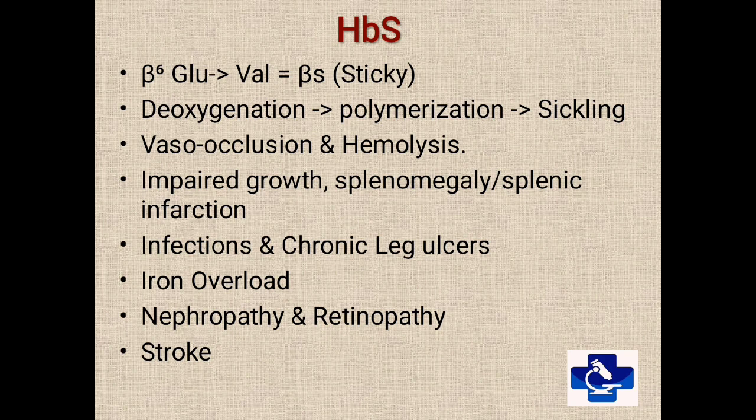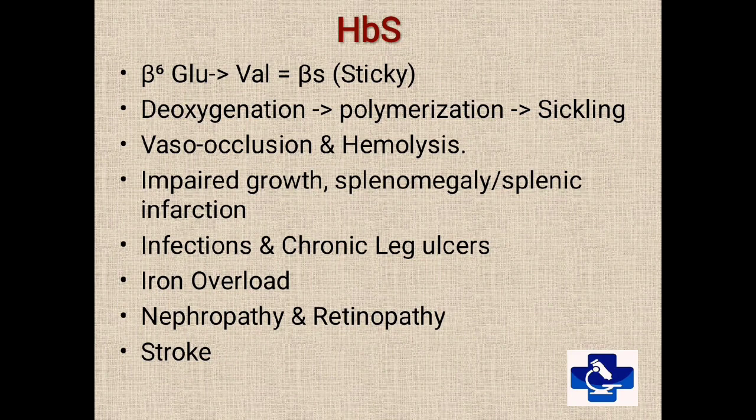These sickle cells are sticky and cause vaso-occlusion and then hemolysis, both in the peripheral tissues and spleen. It leads to impaired growth, splenomegaly or splenic infarction. Infections are common along with chronic leg ulcers. Chronic hemolysis leads to iron overload because of transfusions and also increased iron absorption. The patient may develop nephropathy, retinopathy, and sometimes stroke.